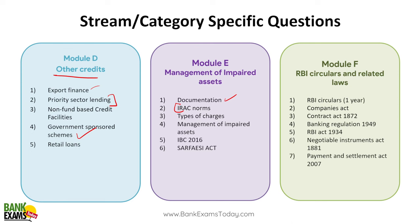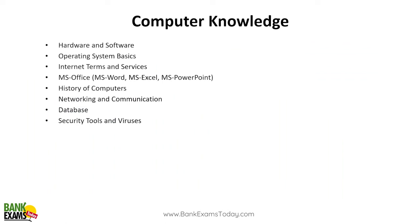Types of charges, mortgages, hypothecation, pledges — all of that is covered under documentation. Management of impaired assets is important. IBC, SARFAESI Act, and RBI circulars for the last one to one-and-a-half years. Companies Act, Contract Act, Banking Regulation Act, RBI Act, Negotiable Instruments Act, and the Payment and Settlements Act are all important. This is the syllabus for professional knowledge.